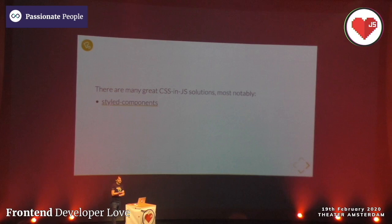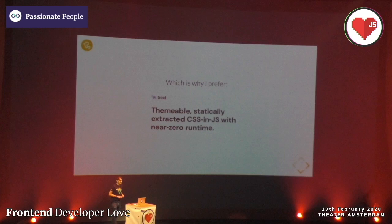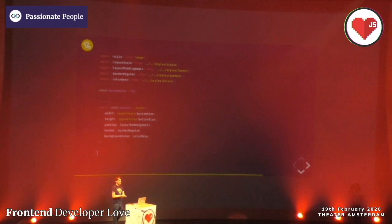There are many great CSS-in-JS solutions, most notably styled-components and emotion, but most come with a runtime cost that users have to pay. Personally I don't really like that, which is why I prefer Treat. It's not really popular right now, but I hope it gets more popular. It's a themeable, statically extracted CSS-in-JS solution with zero or almost zero runtime, so you get all the benefits without hurting your users.